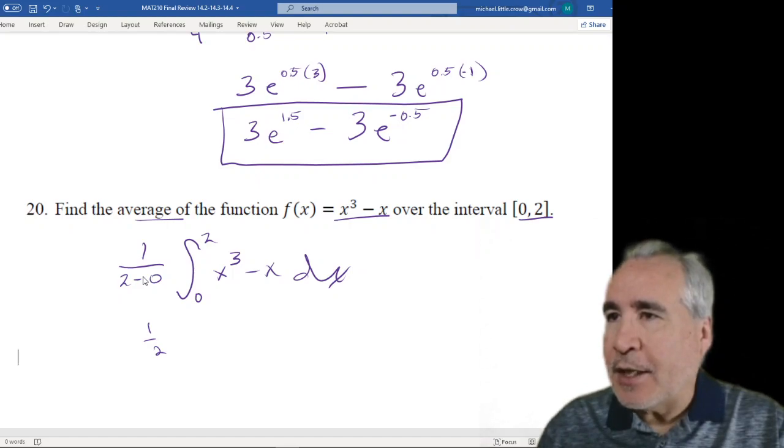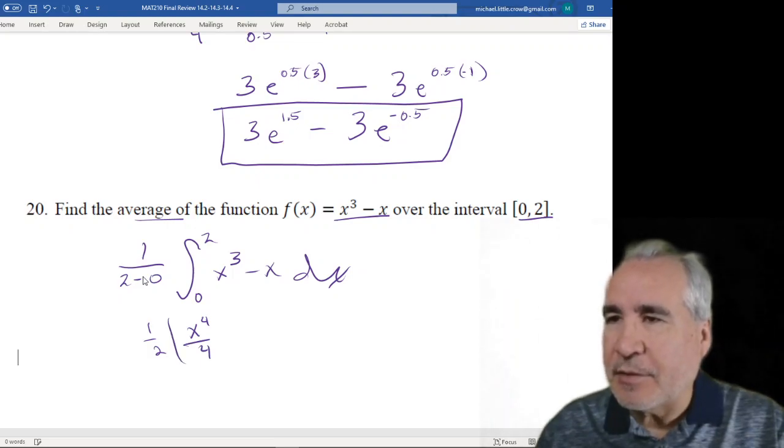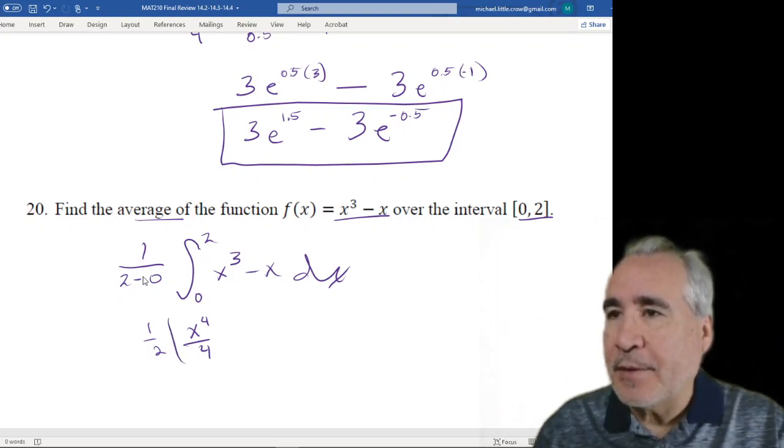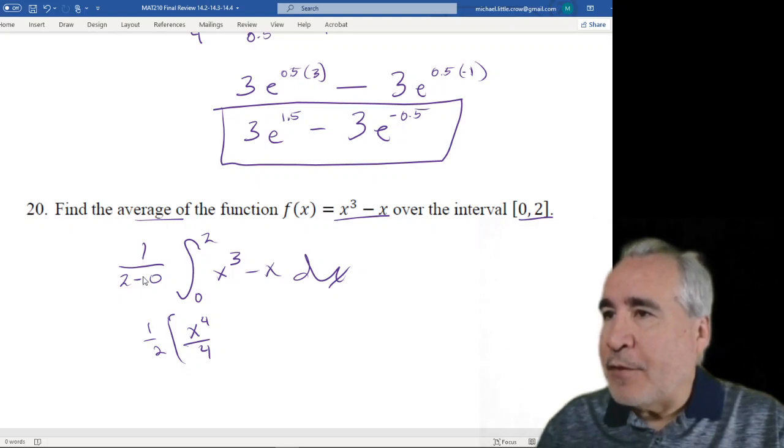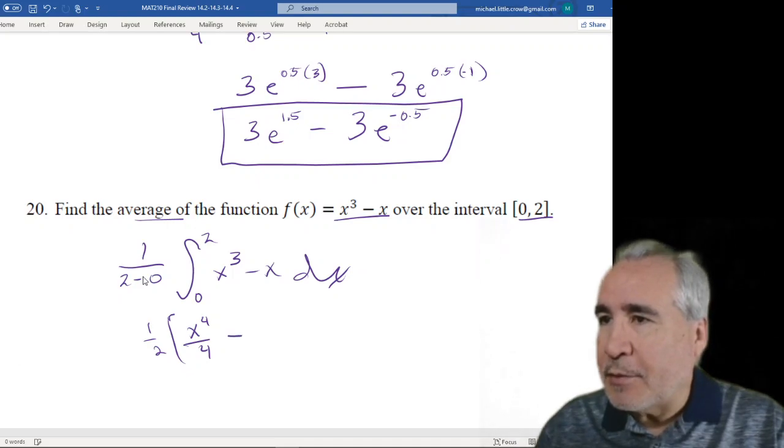Let's integrate. x to the 3rd becomes x to the 4th divided by 4. Let's multiply the whole thing, right? It's a parenthesis. Negative x, so add 1. 1 plus 1 is 2. So this becomes minus x squared over 2. Close that off. And it's going to go from 0 to 2.